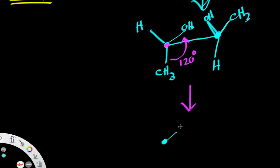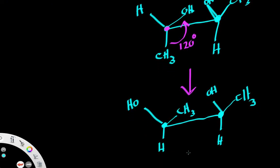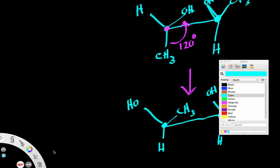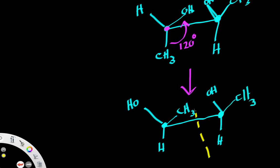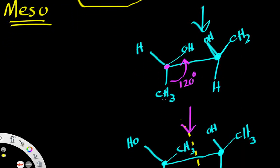After rotating, we now have methyl on this side, then alcohol, then hydrogen, and the other carbon stayed the same. Now we can see with much more clarity that we have an internal mirror plane of symmetry — we can draw our line right here. That is how we can verify whether or not a compound has an internal mirror plane of symmetry.